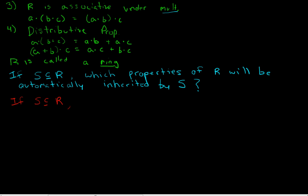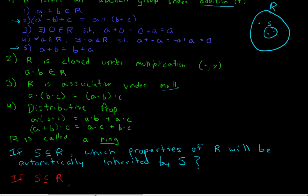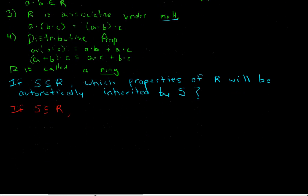So if we want to know whether S is a ring under the operations of R, since it's a subset, the only ones we really need to check are closure under addition, making sure the additive identity 0 is an element of that subset, whether every element in our subset has its additive inverse also in the subset, and that the subset is closed under multiplication. If we prove all of that, we say that subset is called a subring of the ring.